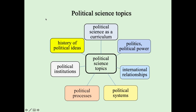Now let's discuss political science topics. Political science topics are: political science as an academic discipline, then politics, political power, history of political ideas, political institutions like government, state, political parties, social movements, political systems, political processes, and international relationships.